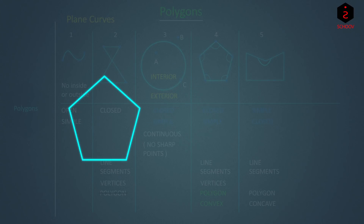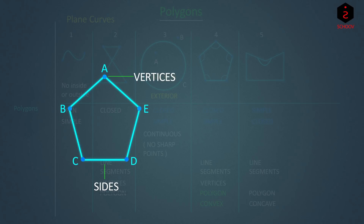Now let's consider figure four and study its elements. Let's name the vertices as A, B, C, D, and E. We can see that it is made up of line segments AB, BC, CD, DE, and EA. These are the sides of a polygon. These line segments meet each other at sharp corners which are called vertices of the polygon. We can also connect any two points through a line segment drawn inside the polygon, such as AC, AD, DB, etc.